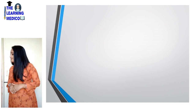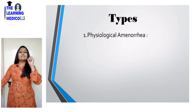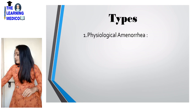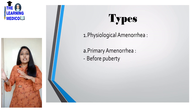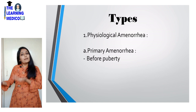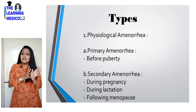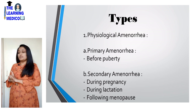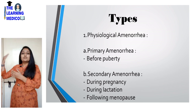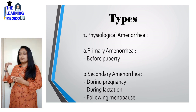Next are the types of amenorrhea. The first type is physiological amenorrhea, which is normal. Primary physiological amenorrhea occurs before puberty — we don't call it delayed puberty, we call it amenorrhea. Secondary physiological amenorrhea occurs during pregnancy, during lactation, and following menopause.